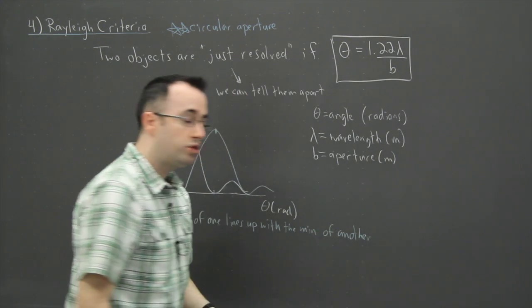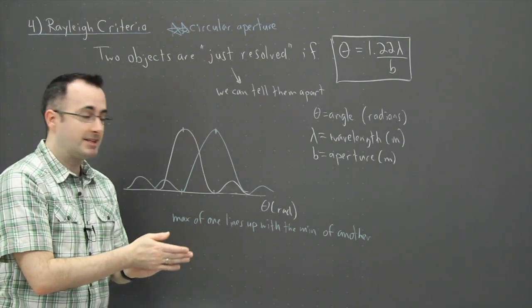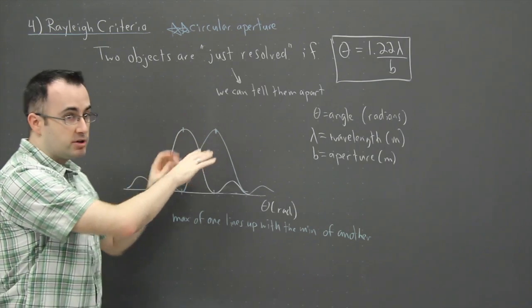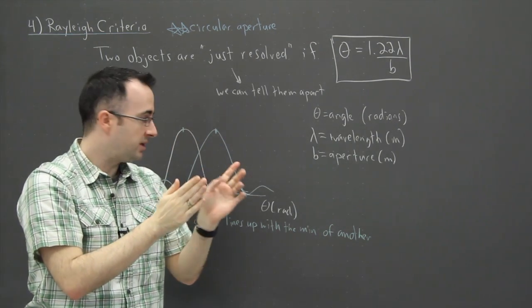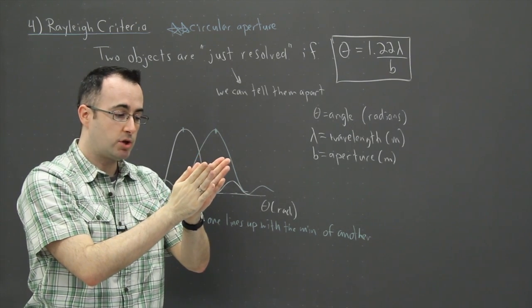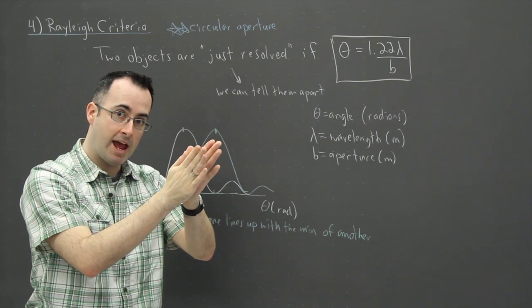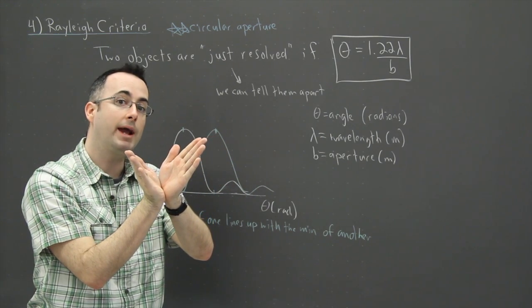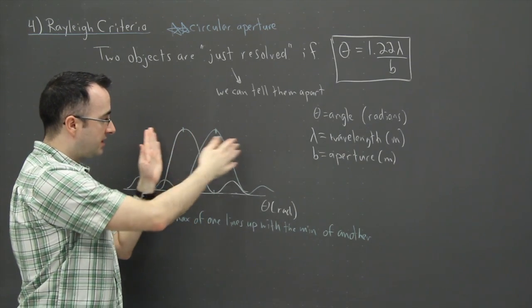So the max of one lines up with the minimum of another. So that's how you know two things are just resolved. Now what I mean by that is this. These two objects, depending on how far away they are, if you think about the angle between these two objects, the angle is going to appear smaller if they're really far away. If it's coming closer to you, that angle is going to appear to widen as it comes closer.